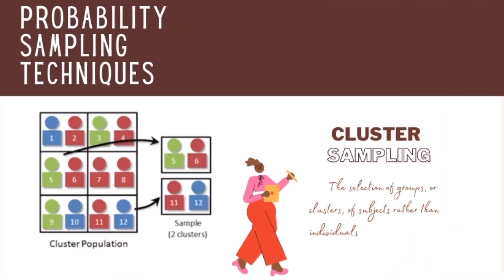Next is cluster sampling. In a clustered sample, subgroups of the population are used as a sampling unit rather than individuals. The population is divided into subgroups known as clusters, which are randomly selected to be included in the study.